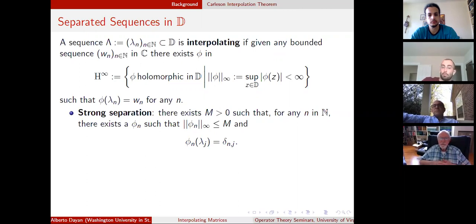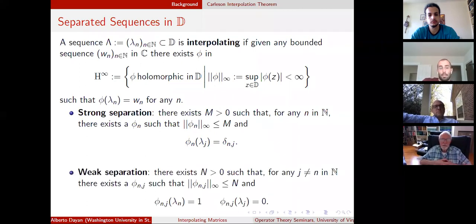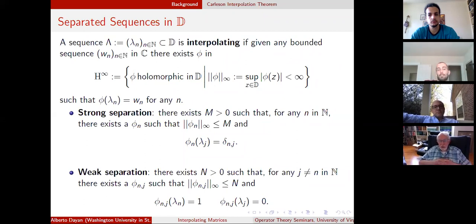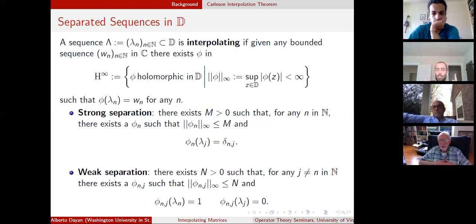In the same fashion, the sequence is weakly separated if there exists a bounded sequence phi_{n,j} such that for any pair of distinct indices n and j, phi_{n,j} separates lambda_n and lambda_j — namely phi_{n,j} of lambda_n is 1, and phi_{n,j} of lambda_j is 0.